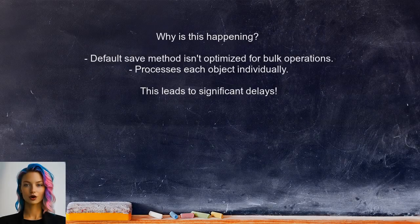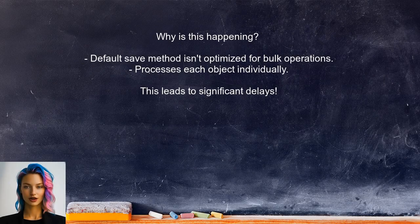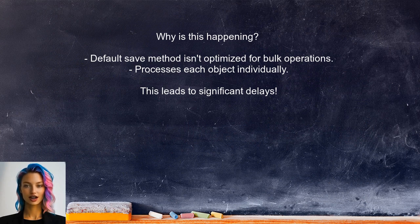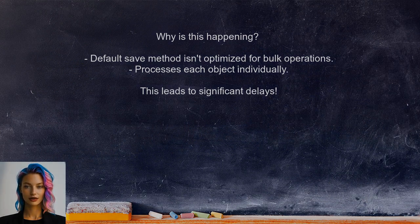So why is this happening? The default method of saving changes in Entity Framework Core isn't optimized for bulk operations. It processes each object individually, which can lead to significant delays when dealing with large datasets.